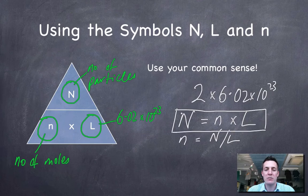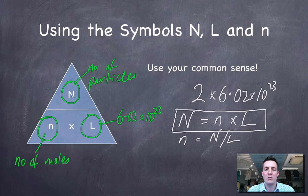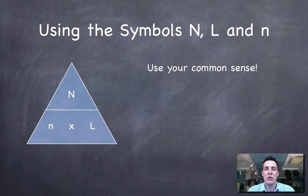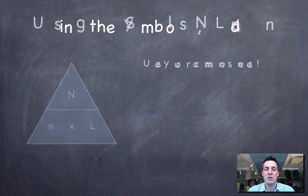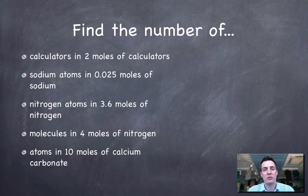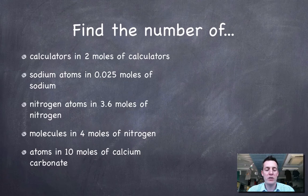And say that if I'm trying to find capital N, I just hide this, and I'm left with little n times capital L. If I'm trying to find little n, I hide it. I'm left with capital N divided by capital L. So try and remember that when you're asked about formulae or when you're having to use formulae, if you can't remember them, you can normally figure them out using common sense. The triangles, I have to say, do save you doing any kind of rearrangement formula. Now, what we're going to do here is we're going to try and use some of these formulae to do some calculations.